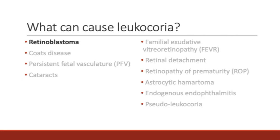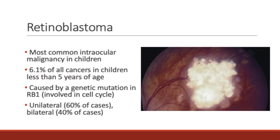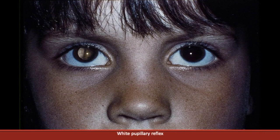Let's first talk about retinoblastoma, the diagnosis we are most concerned about. Retinoblastoma is the most common intraocular malignancy in children and accounts for about 6% of all cancers in those less than 5 years old. It is most commonly caused by a genetic mutation in RB1, a tumor suppressor gene involved in the cell cycle. The picture to the right is a fundus photograph showing a white colored mass growing from the retina consistent with retinoblastoma. Because retinoblastoma is a white colored mass, if the light is in line with the tumor, you can expect the pupillary reflex to appear white, as seen in this patient.